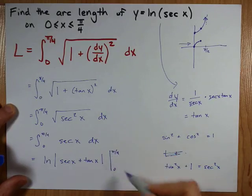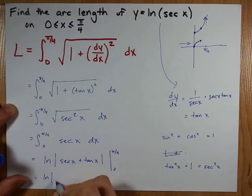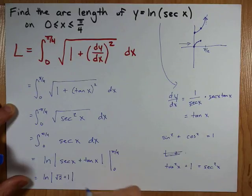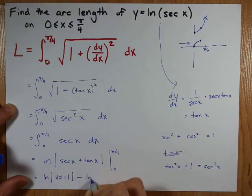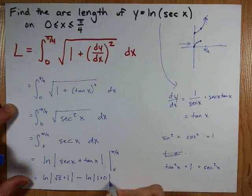At this point, it's just plugging in the numbers. I have the ln of the secant of pi over 4, which is root 2, plus the tan of pi over 4, which is 1. And I'm going to subtract the ln of the secant of 0, which is 1, plus the tan of 0, which is 0.